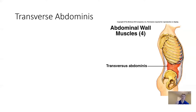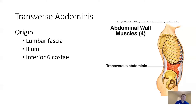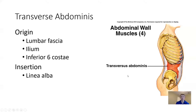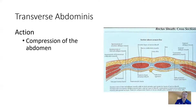The most deep of our abdominal muscles is transverse abdominis. It's a little bit different than the other abdominal muscles. It has its origin on the lumbar fascia, the ilium, and the inferior six costal ribs — a posterior origin — and an insertion on the linea alba. This muscle moves across our body in the transverse plane; it's not going to cause any real rotation or movement. What it really causes is compression of the abdominal wall.